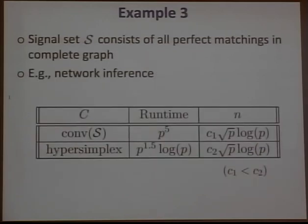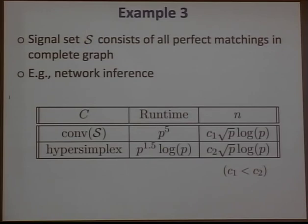A third example with only a constant factor increase in data is where the signal set consists of all perfect matchings in the complete graph, arising in network tomography and network inference. Projecting onto the best possible convex relaxation already requires polynomial time, but you get a dramatic reduction by observing that every element has the same number of ones and zeros, allowing projection onto the hypersimplex — again at the cost of a constant factor in samples.